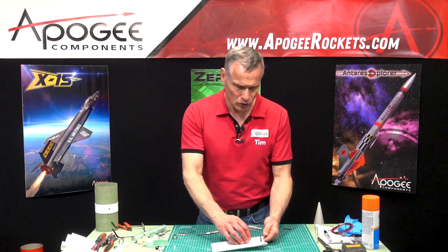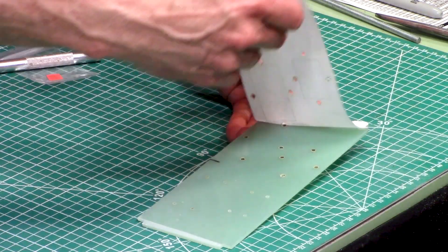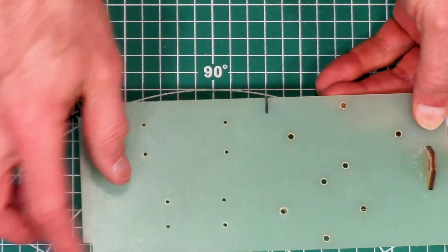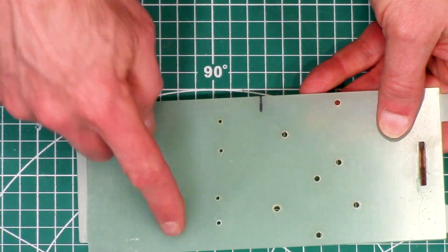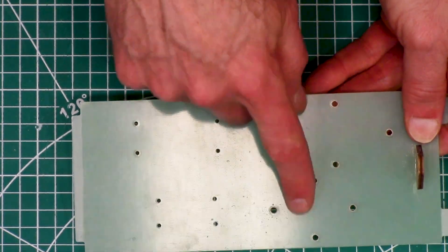At this point I've got all my holes drilled and I can take off the paper. You can see my holes. This is going to be for my EZ Mini and this one will be for my other altimeter. This is for the battery.